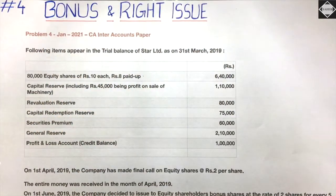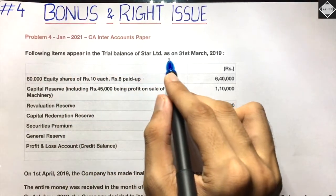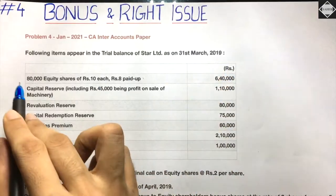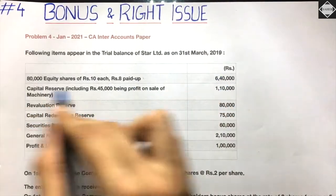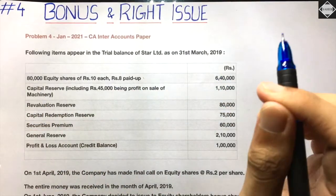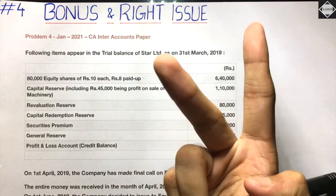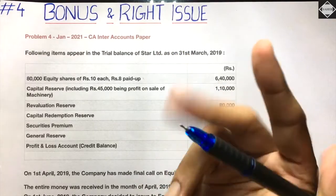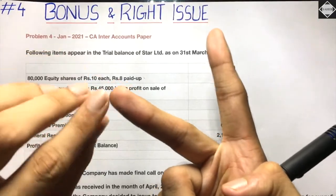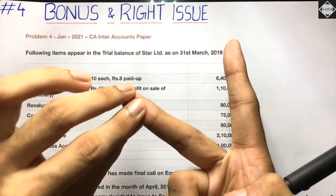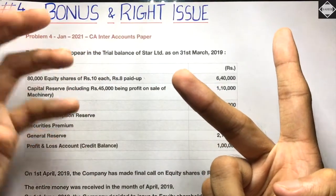Now let's understand the question. Following items appear in the trial balance of Star Limited as on 31st March 2019: 80,000 equity shares of ₹10 each, ₹8 paid up — amounting to ₹6,40,000. This is the equity share capital. The key point is the equity shares are partly paid up at ₹8, with face value of ₹10, so ₹2 is still pending.